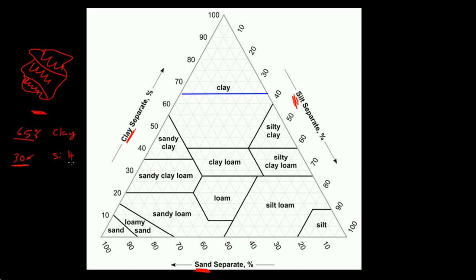30% silt. You go to the silt side, and these numbers are diagonal. You draw a line that's parallel to the direction they're written in. 30% would be somewhere over here. Notice that these two lines intersect right here. This intersection is in this little section, and it's a clay. So you know that the soil type here is a clay.